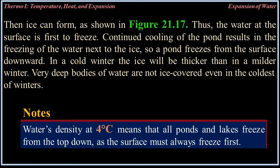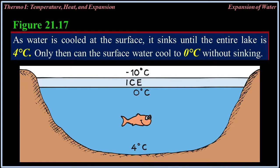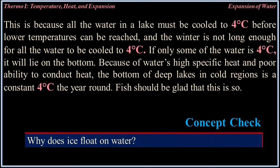The surface must always freeze first. As water is cooled at the surface, it sinks until the entire lake is 4 degrees Celsius. Only then can the surface water cool to 0 degrees Celsius without sinking. All the water in a lake must be cooled to 4 degrees Celsius before lower temperatures can be reached, and in many cases the winter is not long enough for all the water to be cooled to 4 degrees Celsius. If only some of the water is 4 degrees Celsius, it will lie on the bottom. Because of water's high specific heat and poor ability to conduct heat, the bottom of deep lakes in cold regions is a constant 4 degrees Celsius year-round. Fish should be glad that this is so. Concept check: Why does ice float on water?